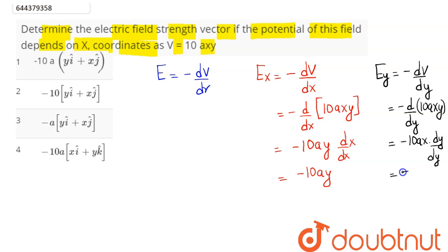So this comes as minus of 10Ax. So the net electric field at this position can be written as Ex i cap plus Ey j cap. Hence the x component is minus 10Ay i cap and the y component is minus 10Ax j cap. Taking minus 10A common this comes as y i cap plus x j cap.